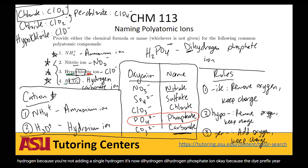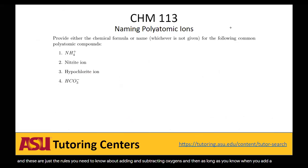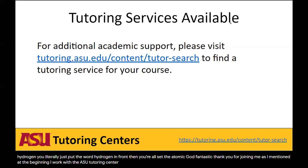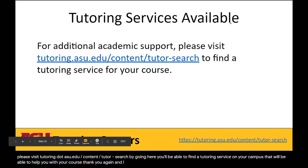These are the only cations you need to know, and these are the only anions you need to know — though your teacher might have extra ones. These are your cations, these are your five anions, and these are the rules you need to know about adding and subtracting oxygens. As long as you know that when you add a hydrogen you put the word hydrogen in front, you now know how to name polyatomic ions. Thank you for joining me. If you want more information about tutoring services, please visit tutoring.asu.edu/content/tutor-search to find help on your campus. Thank you, and have a fantastic day.